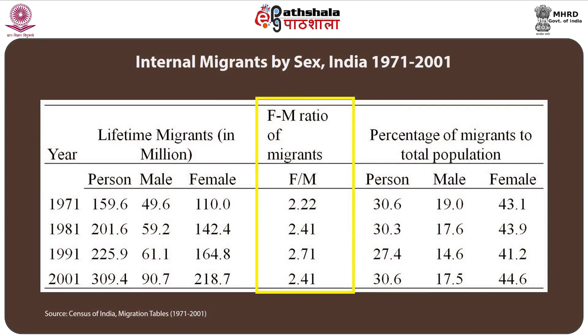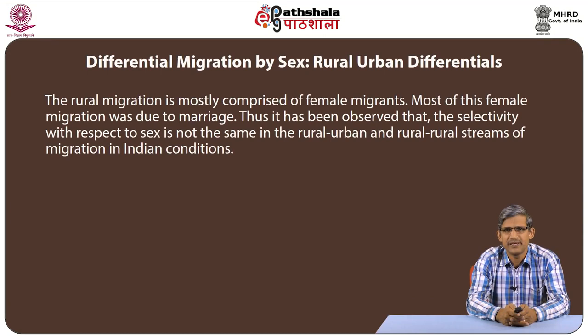In most of Asia and Africa, where the process of urbanization is in its initial stages, males predominate when migration to urban areas is considered. However, a completely different pattern was observed in rural migration. Through previous studies, it was found that rural migration was dominated by females — a pattern very common even in India — partly because of marriage migration of females from one place to another.